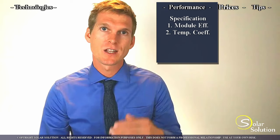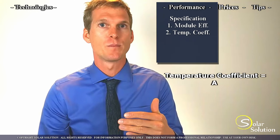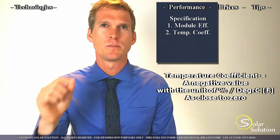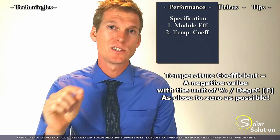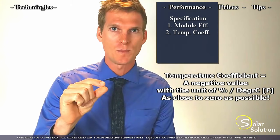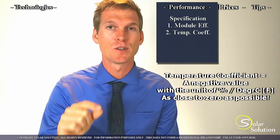The second one is the temperature coefficient, which describes the extent to which the solar panel performs less as the panel heats up. The unit is percentage per degree Celsius. It's always a negative value and you want to have this number as small as possible, so as close to zero as possible.